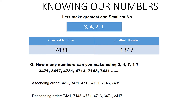First, let's make the greatest and smallest number. If I give you four digits — 3, 4, 7, and 1 — and ask you to make the greatest number and the smallest one, how do we start? For the greatest number, we choose the greatest digit first. Seven is the greatest digit, so seven comes first. Then we go in descending order: seven, then four, then three, then one.